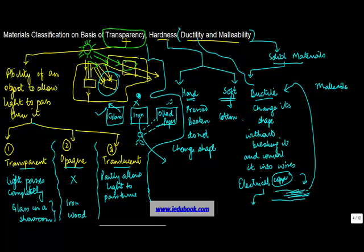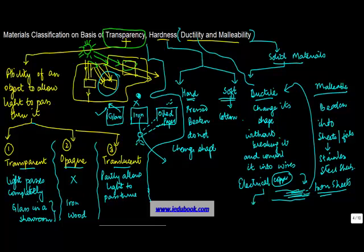So these wires are said to be ductile; copper is said to be ductile. A material is said to be malleable if it can be beaten into sheets or foils. For example, when you see stainless steel sheets or iron sheets which are used to keep at the top of houses, especially in places where you have a lot of rain, these are examples of malleable materials.